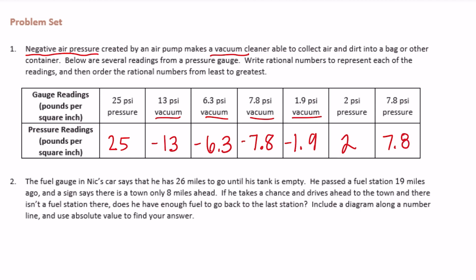Now we just need to order them from least to greatest. So we're looking for the smallest one. I'm going to start with anything negative. So negative 13, negative six and three-tenths, negative seven and eight-tenths, negative one and nine-tenths.